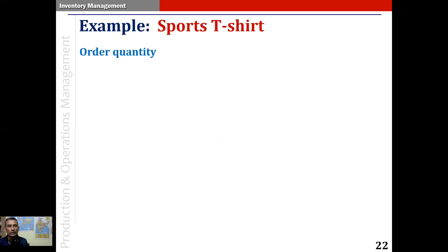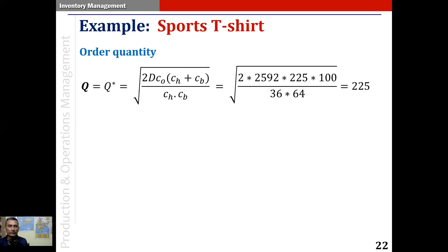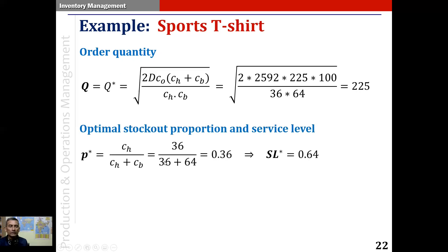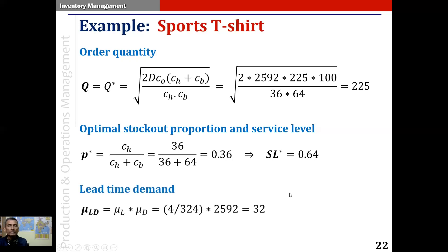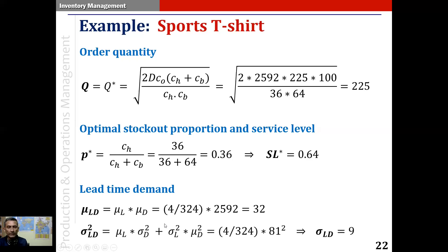Applying the EOQ formula with backorderingusing the given mean demand and cost parameters, Q-star comes out to be 225. The optimal stockout proportion P-star is 0.36, so the optimal service level is 0.64. Applying the mean and variance of lead time demand formulae, the mean lead time demand is 32, the variance of lead time demand is (4/324) × 81², which gives a sigma of lead time demand equal to 9.